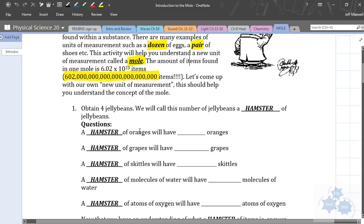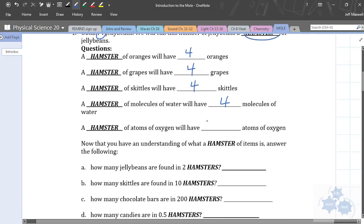A hamster. If I have a hamster of oranges, how many oranges do I have? I have four. So you can fill that in your page. Four. Because one hamster includes four items. What about a hamster of grapes? How many grapes? Four. If I have a hamster of Skittles, you guys getting a hankering for something sweet here? A hamster of molecules. Now we're talking about something very different, very small. But a hamster of molecules would have how many molecules of water? Four. A hamster of atoms of oxygen, four atoms of oxygen.